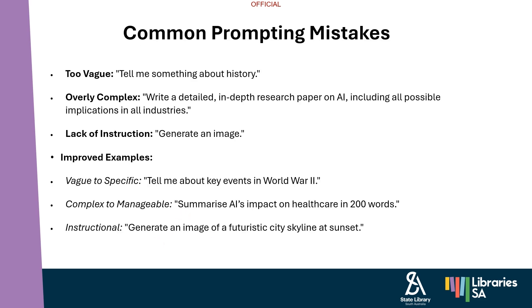Common prompting mistakes — it's easy to fall into common pitfalls like being too vague or making your prompt overly complex. The AI needs to understand what you are asking, and providing too much at once can overwhelm it. For example, too vague: 'Tell me something about history' — it could be anything. Improved example: 'Tell me about key events in World War Two,' which will get you a much better answer. You can also get follow-up questions from generative AI asking what part of history, and then you can be more specific.